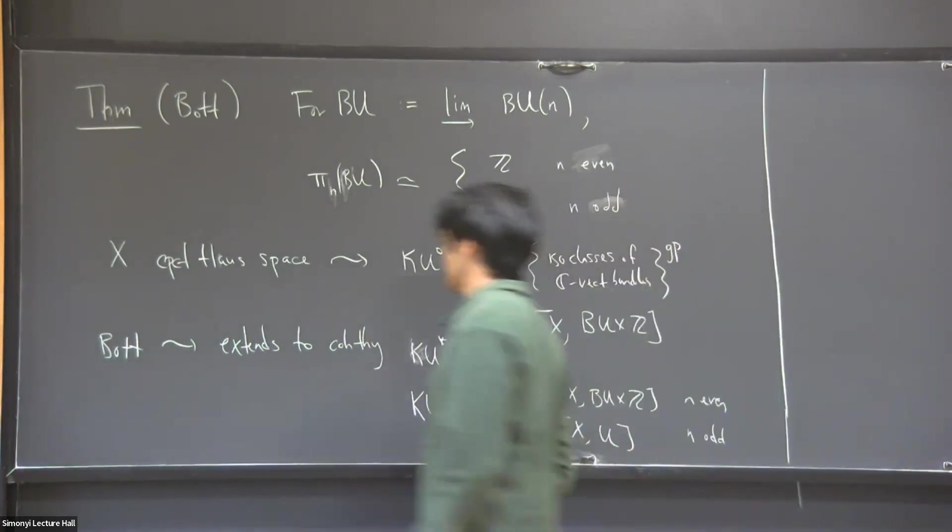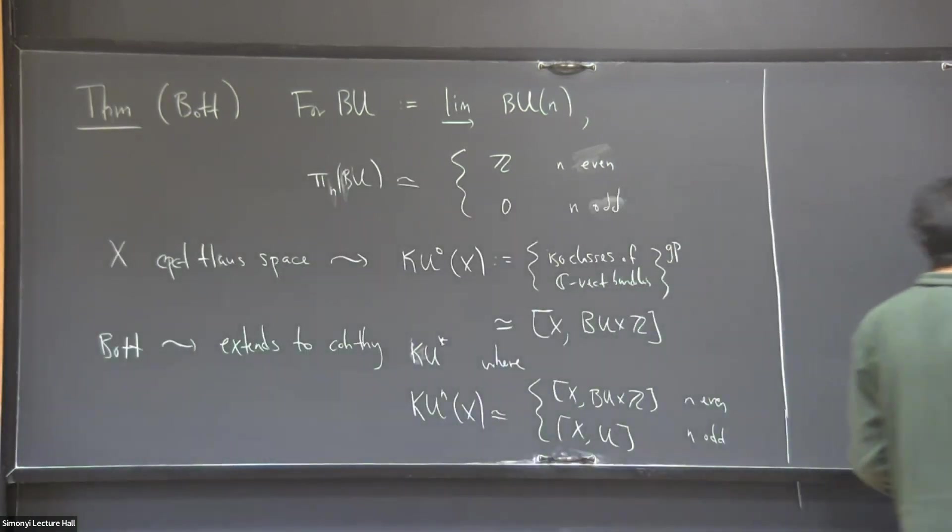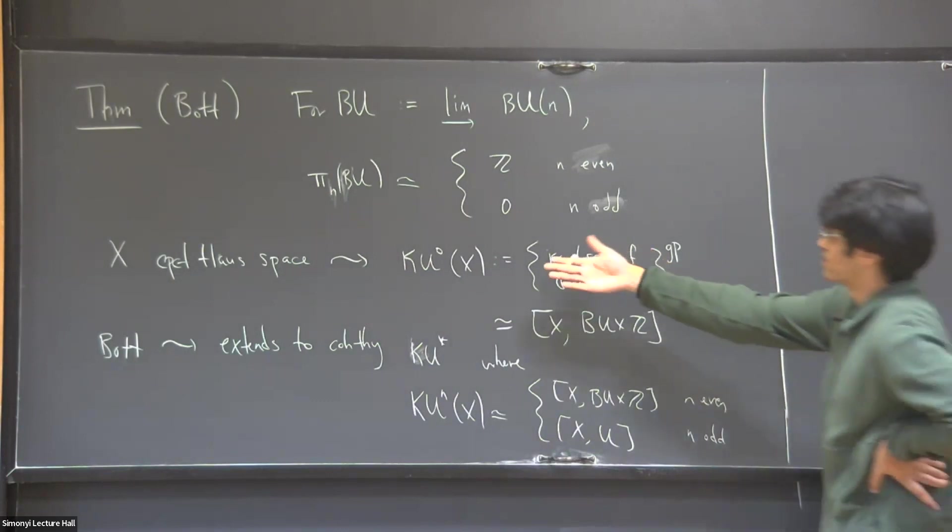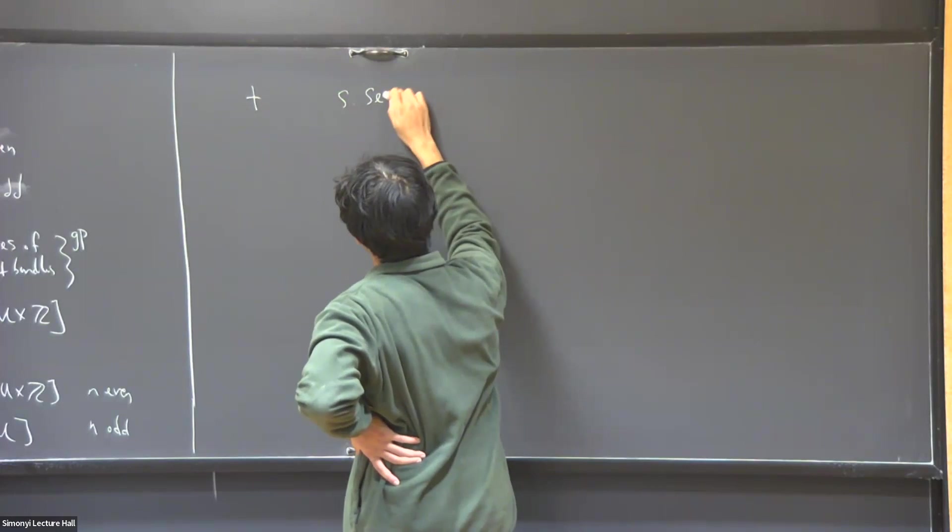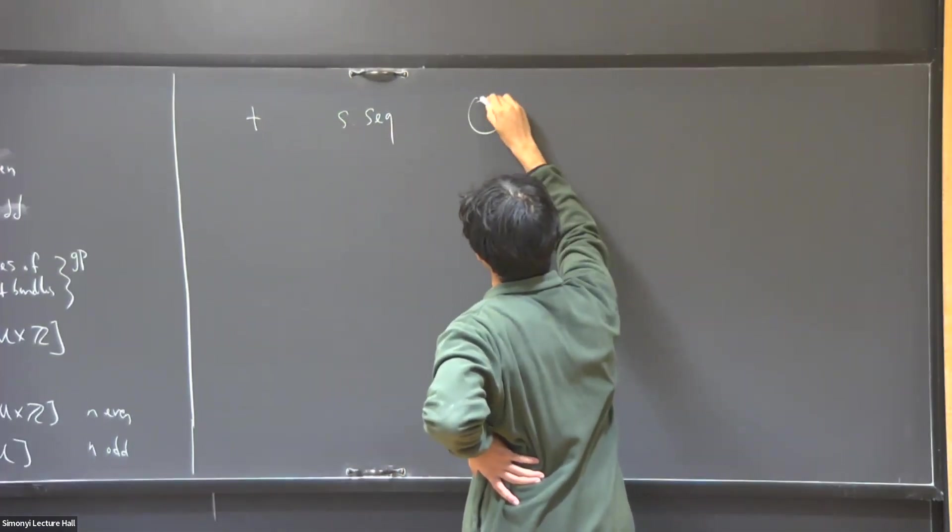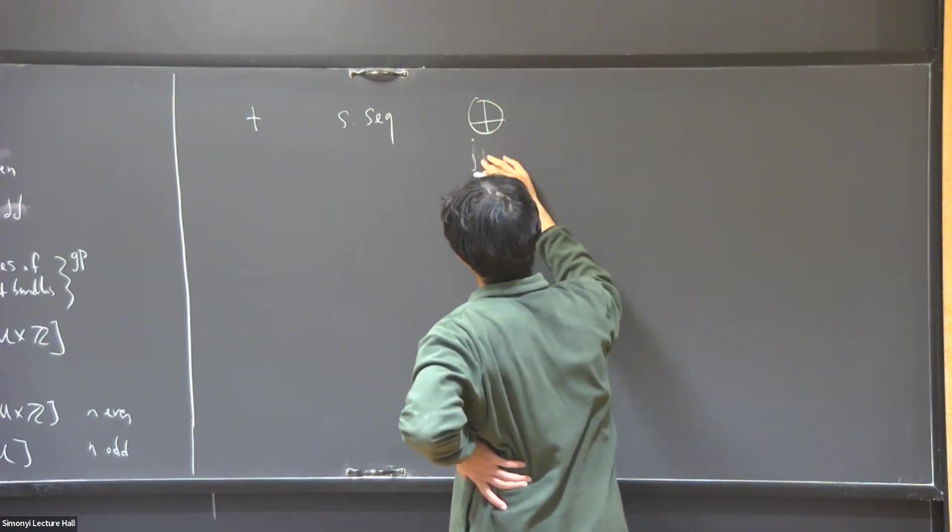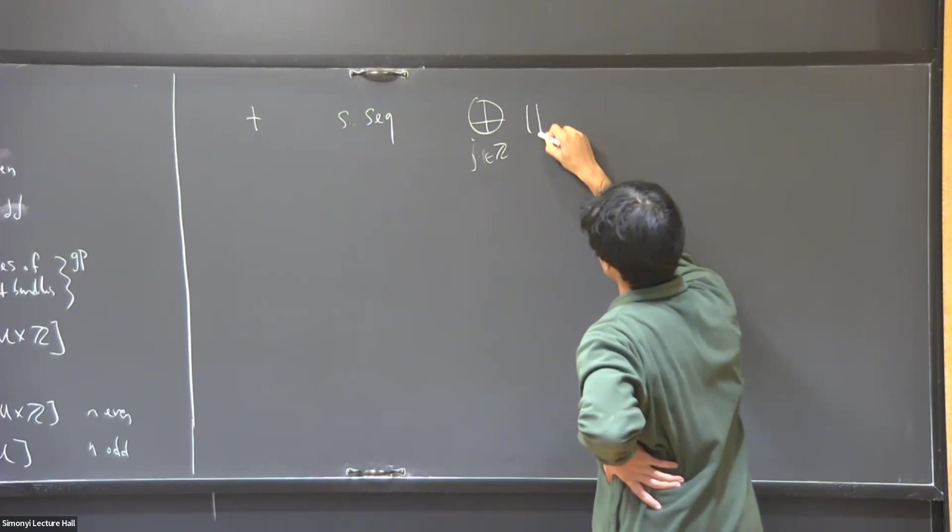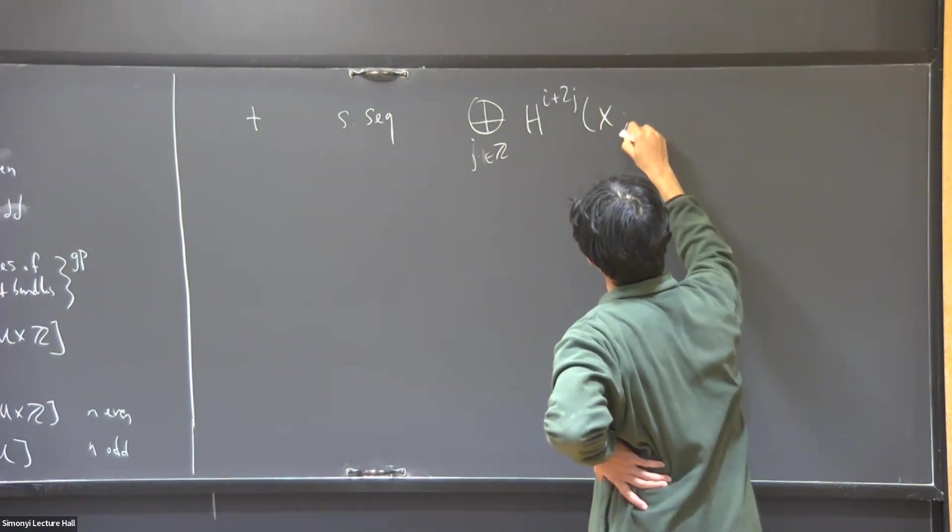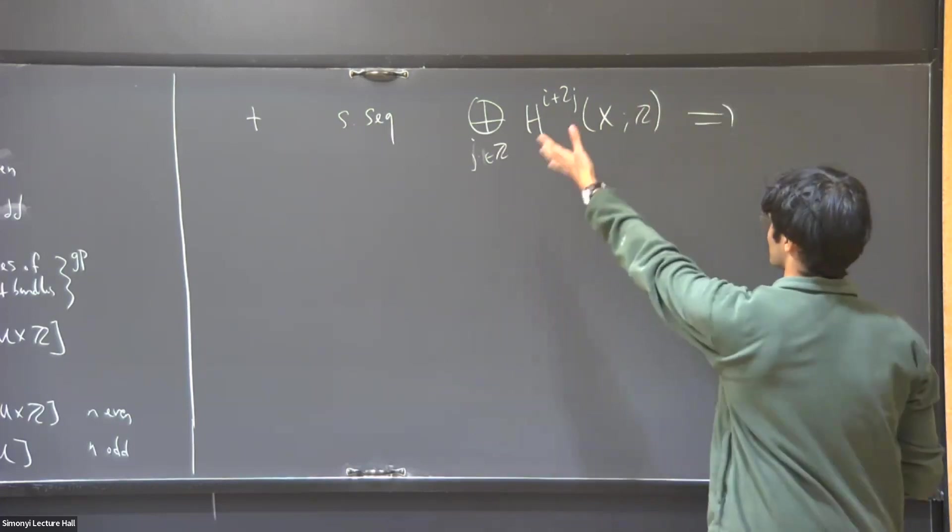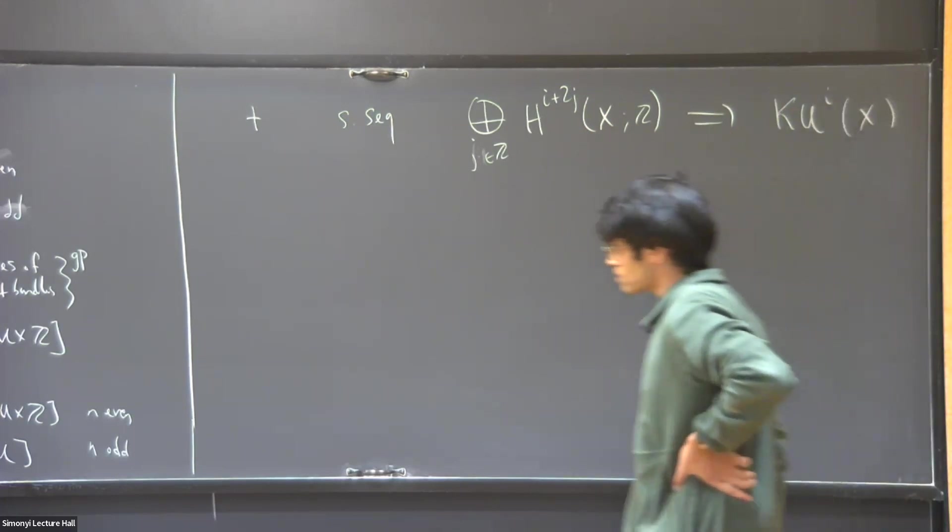And this is not just, so the fact that this extends to a cohomology theory gives you a tool to calculate these groups. So when you have such a cohomology theory, there's something called a spectral sequence. Let me just write the signature of this object. It's something that starts with a bunch of ordinary cohomology groups. So this is the usual singular cohomology of the space. It's some tool that starts with this information and ends up at, in this case, these K-theory groups.